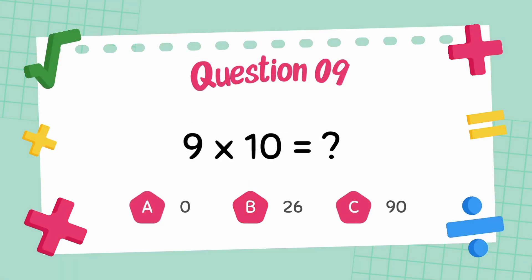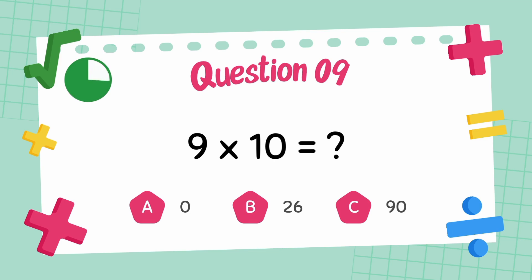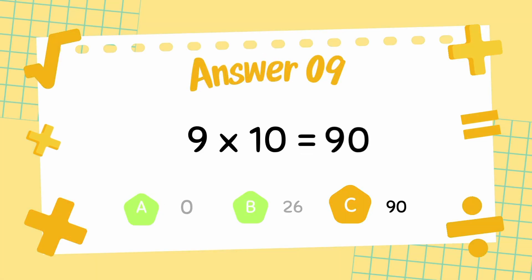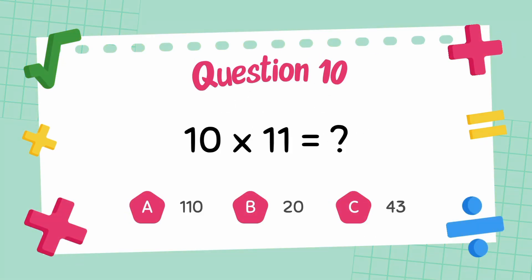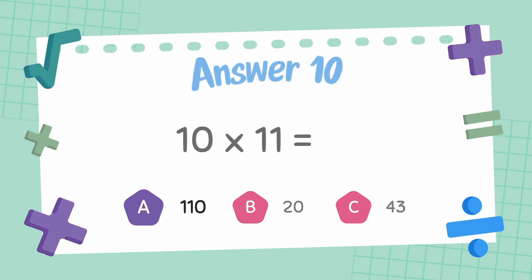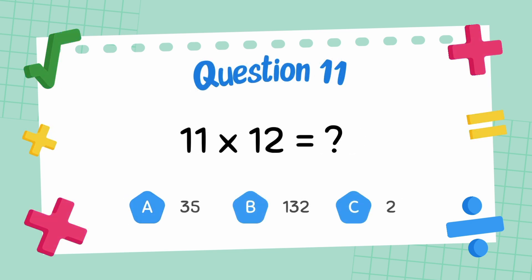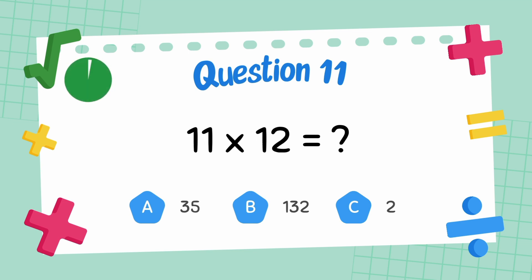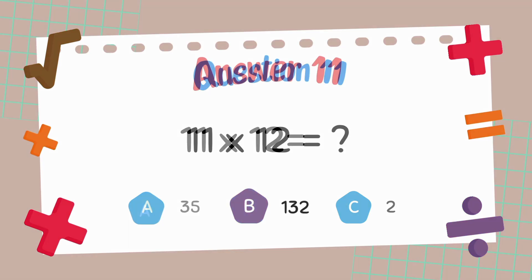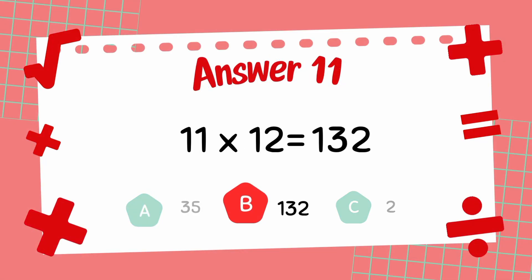What is 9 multiply 10? The answer is 90. What is 10 multiply 11? The answer is 90. What is 11 multiply 12? The answer is 132.